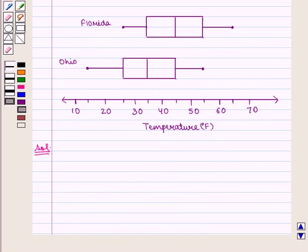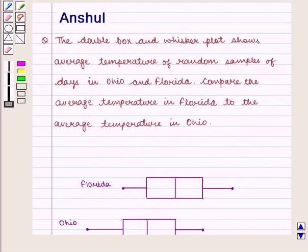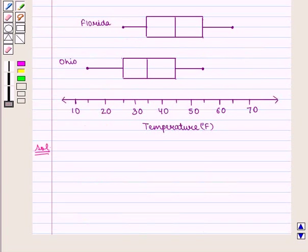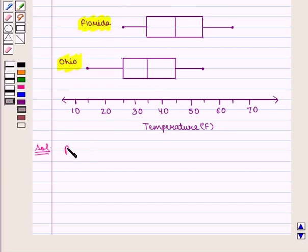Now let us proceed to the solution. In this question we are given data which is represented in box and whisker plot. We study the temperatures of two cities. The given plot is based on samples drawn randomly of days in Florida and Ohio. Here population is the temperature on all the days.